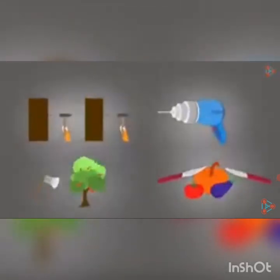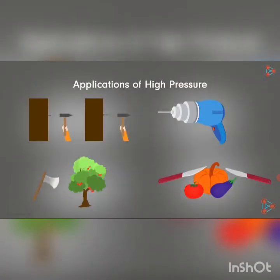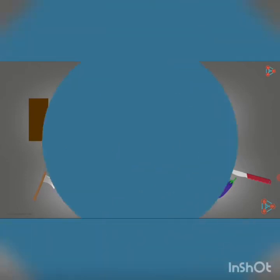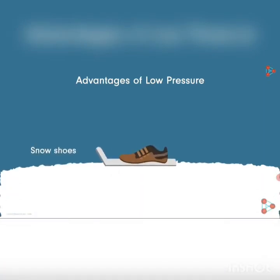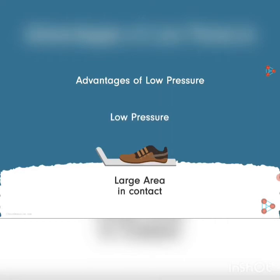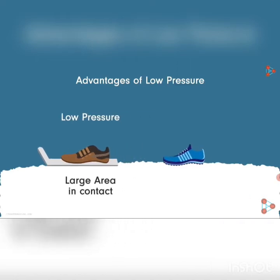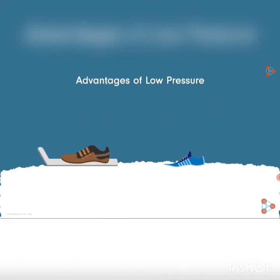The examples so far are applications of high pressure. But there are situations where we require low pressure. We use snowshoes to walk on snow: their larger area of contact with the snow reduces the pressure, allowing us to walk without sinking. With normal shoes, the comparatively smaller area of contact means more pressure on the snow, causing our feet to sink. Note that the force applied — our weight — is the same in both cases.